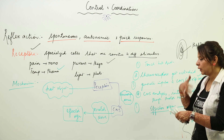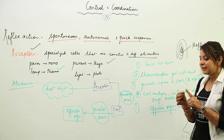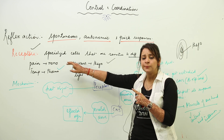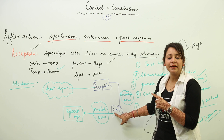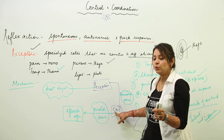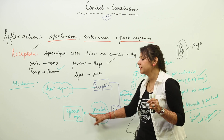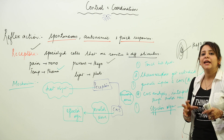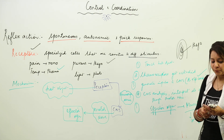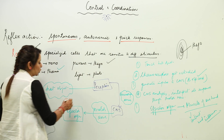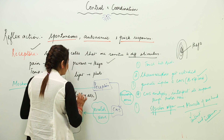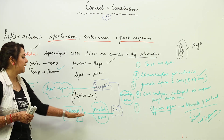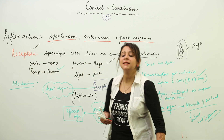Take another example: a needle pricks your finger. You feel pain, so the nociceptors get activated and generate an impulse to the CNS through the sensory nerve. The CNS analyzes that the needle has pricked your finger and sends a response via the motor nerve to the effector organ — the muscles of the hand — which contract and the hand is withdrawn. This entire pathway is called the reflex arc.